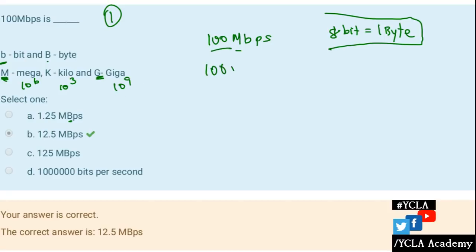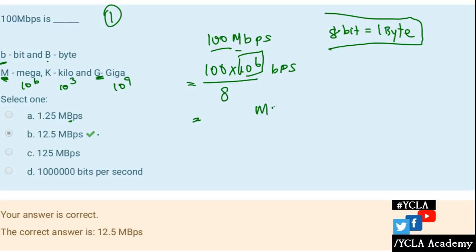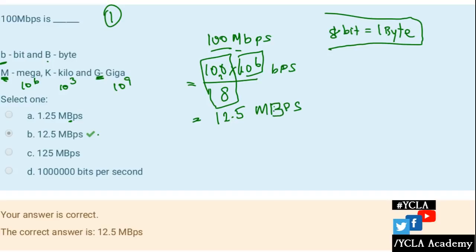If you want to talk about 100 Mbps, so 100 into 10 to the power 6 — this is bits per second. If you want to convert to bytes, divide by 8. So we get megabytes per second. 100 divided by 8 is 12.5 — so 12.5 megabytes per second.